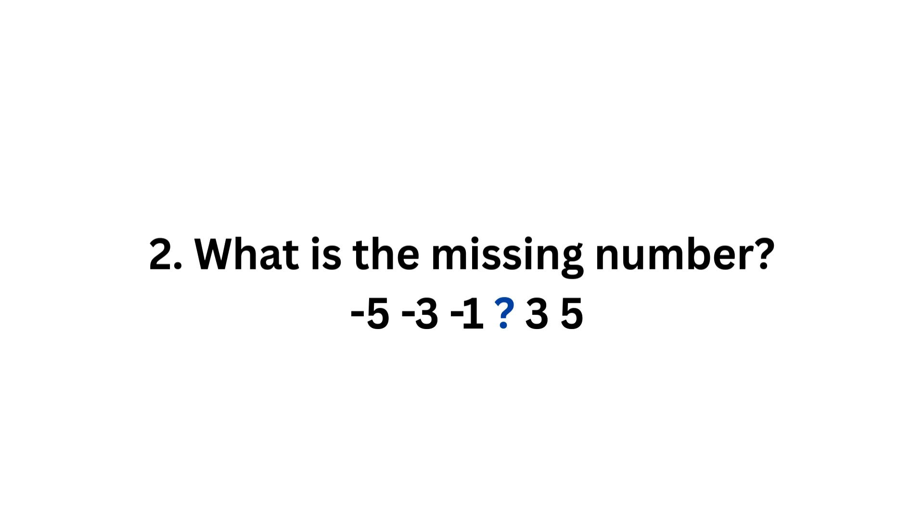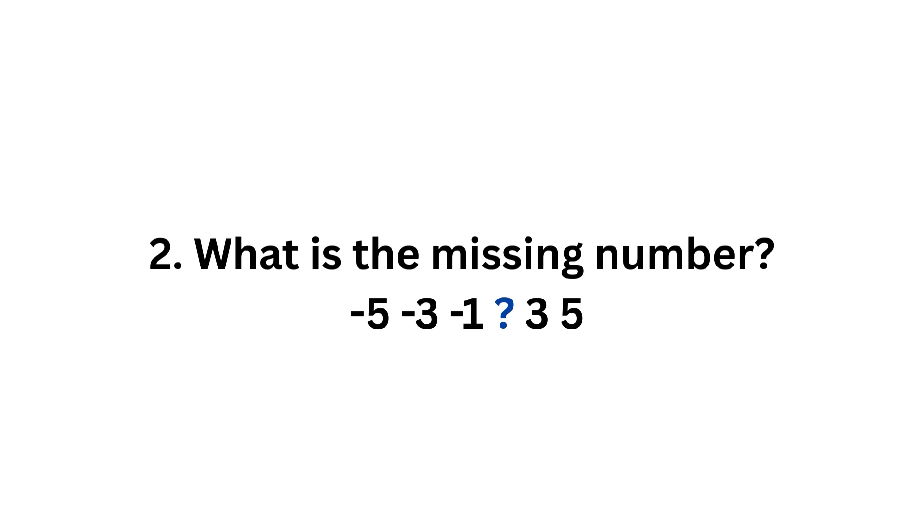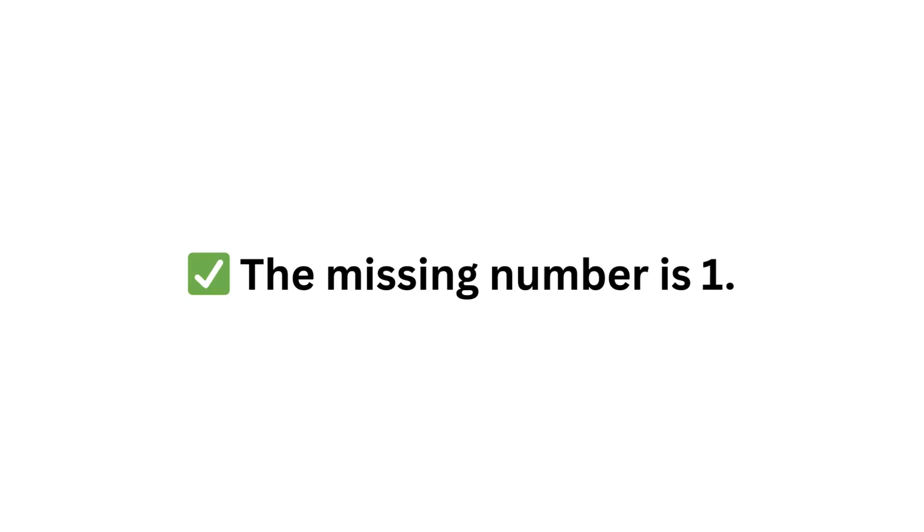What is the missing number? We're counting forwards in this video, but we're skip counting. So minus five, minus three, minus one. We're skip counting by two. So after minus one, we have our mystery number, and then we're in the positive numbers, three and five. Our missing number is number one. So it's minus five, minus three, minus one. If we weren't skip counting by two, after minus one it would be zero and then one. So the missing number is number one.